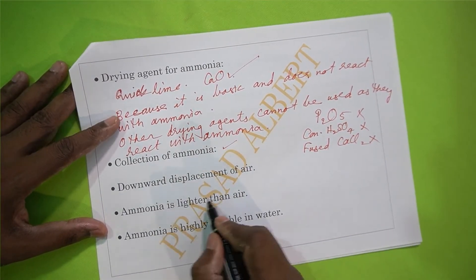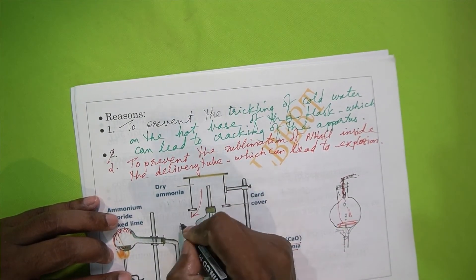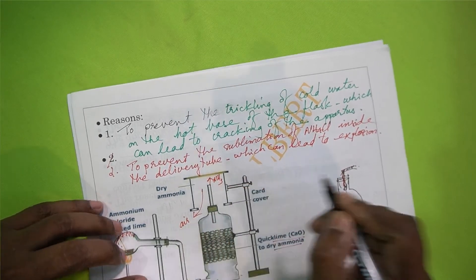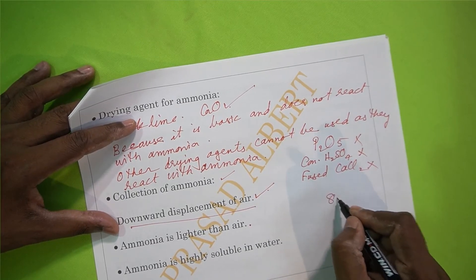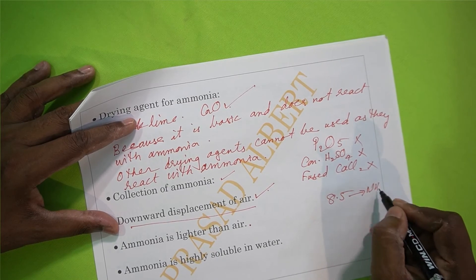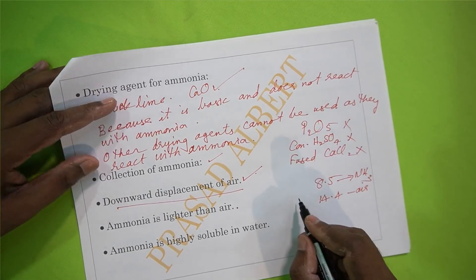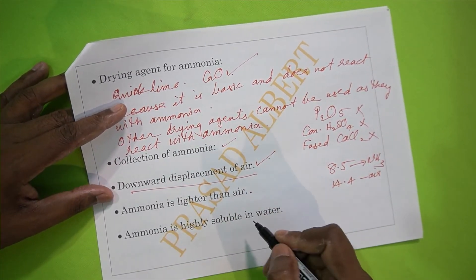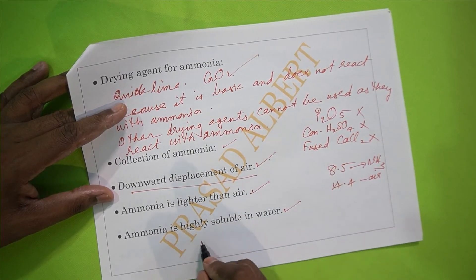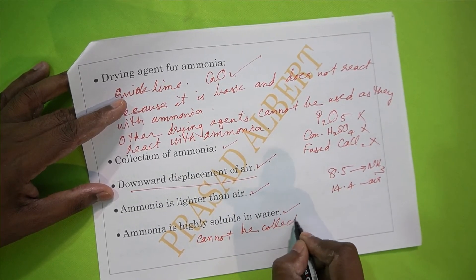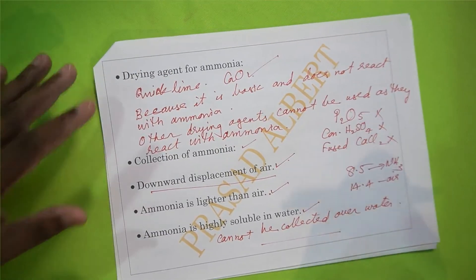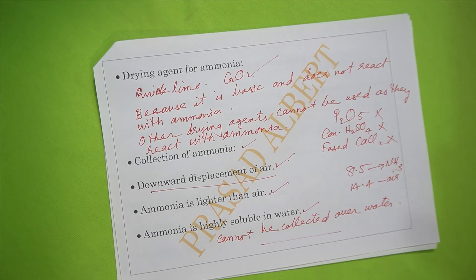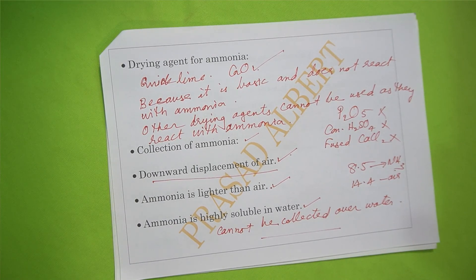Collection of ammonia: ammonia is collected by downward displacement of air. The air inside the flask moves downwards while ammonia moves upwards. Ammonia has a density of 8.5 and air has a density of 14.4, so ammonia is lighter than air and can easily displace air downwards. Ammonia is highly soluble in water, so it cannot be collected over water — it can only be collected over air.